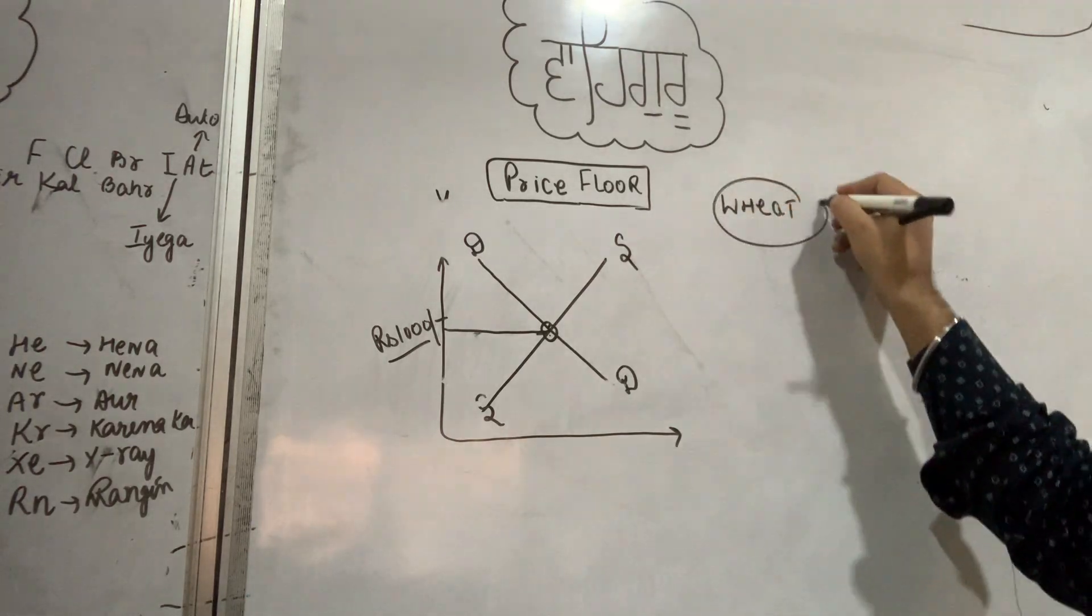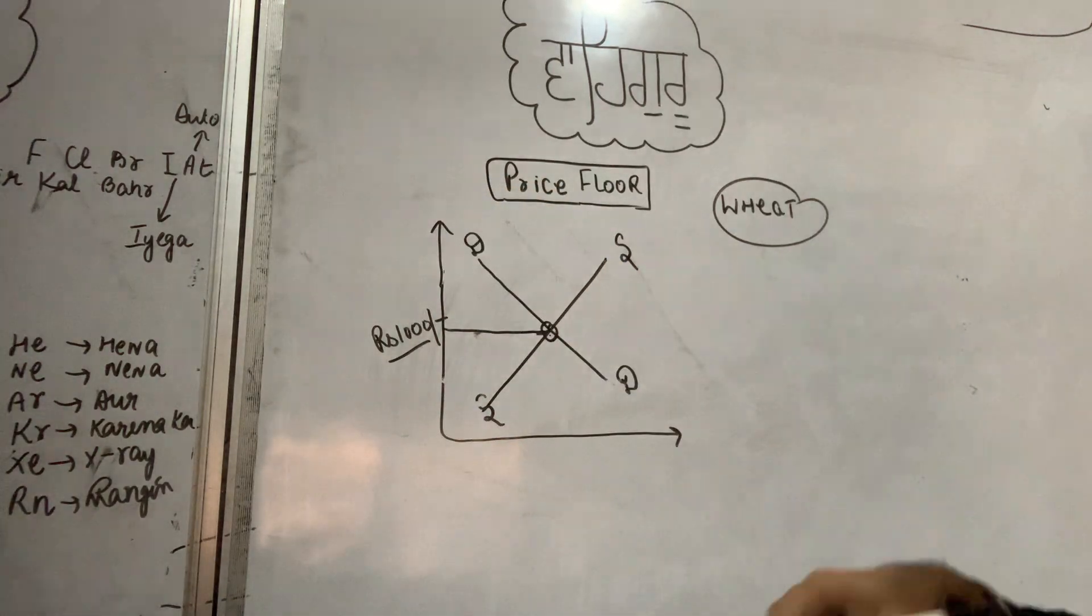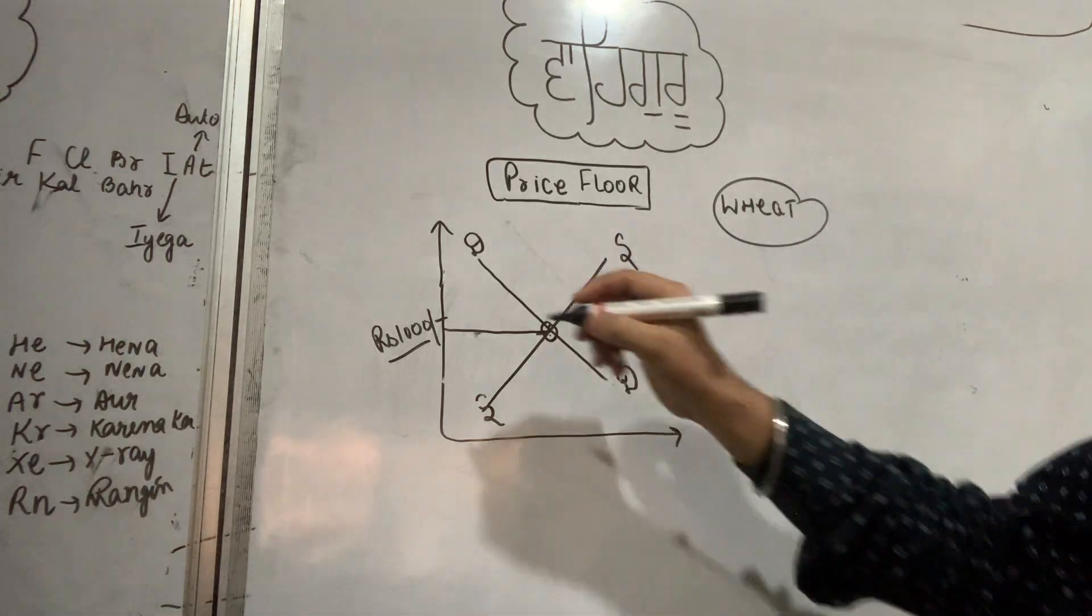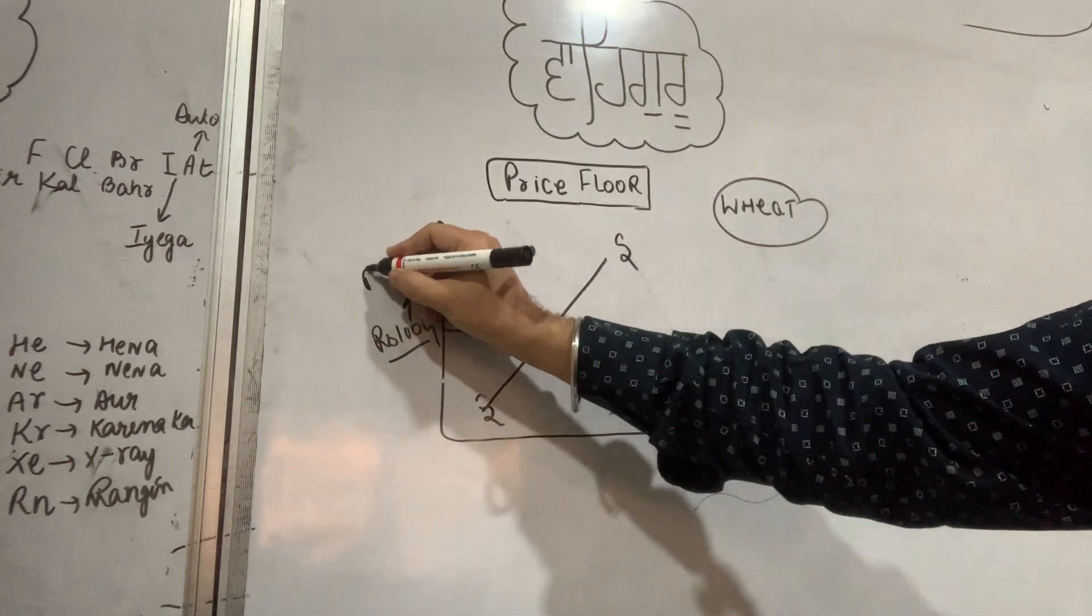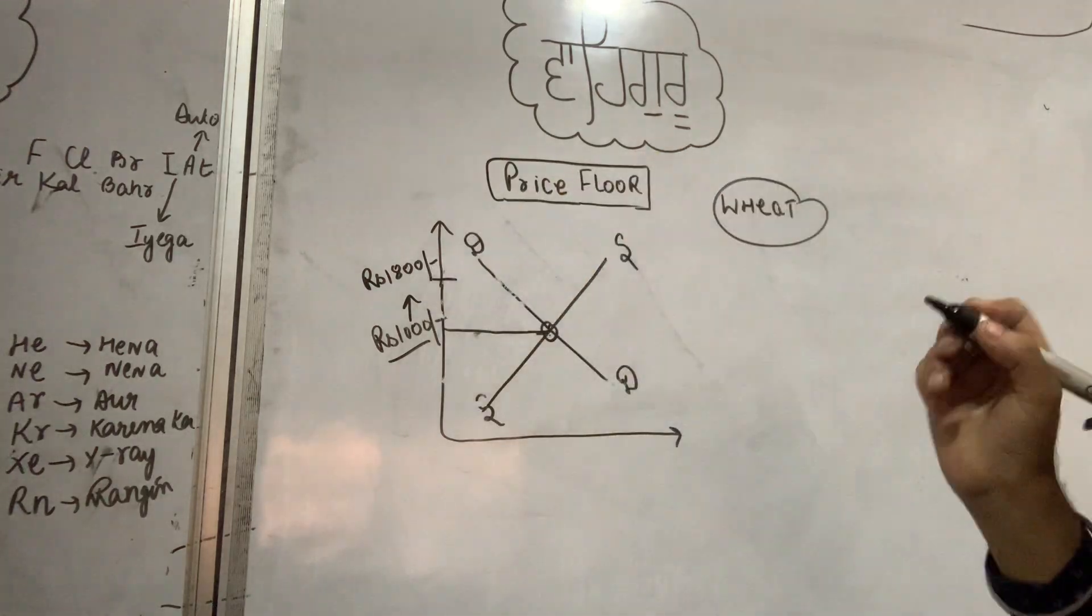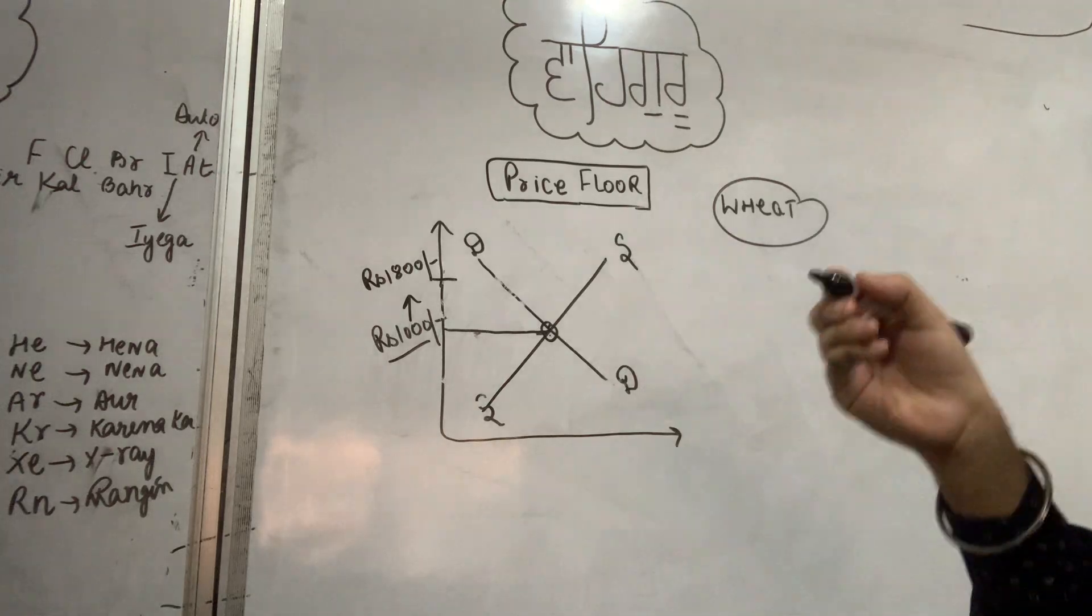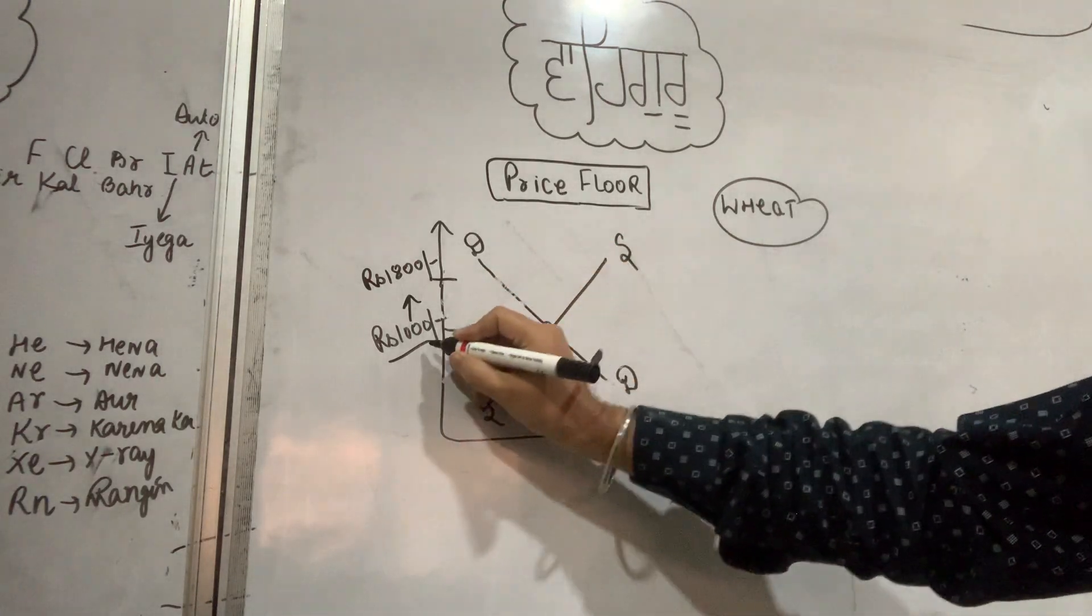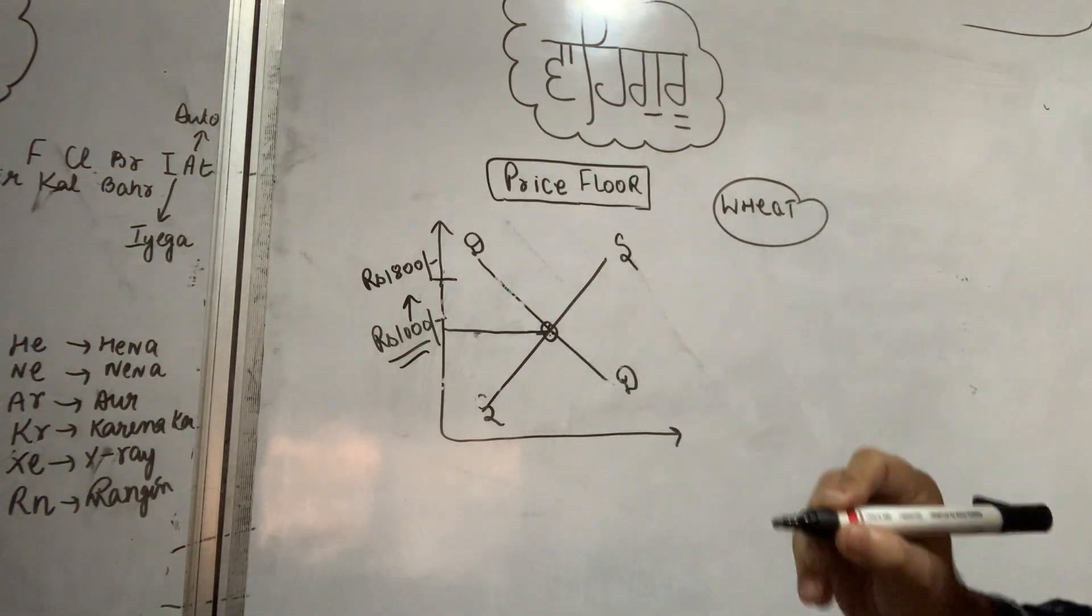Suppose for agricultural product wheat, this is the price. At 1000 rupees, farmers think their cost is not even fully covered. So what does the government do? The government forcefully raises the price upward, which we call MSP. The government forcefully raises the price and fixes it at 1800 rupees. Anyone who buys from farmers must buy at 1800 rupees.